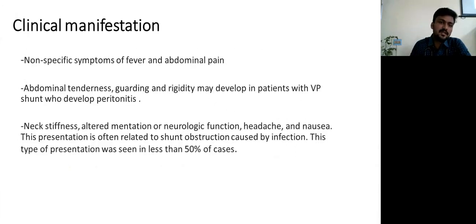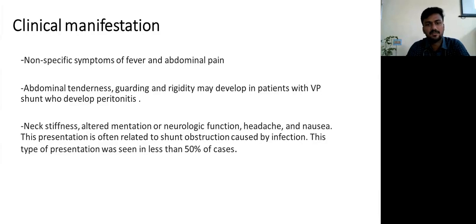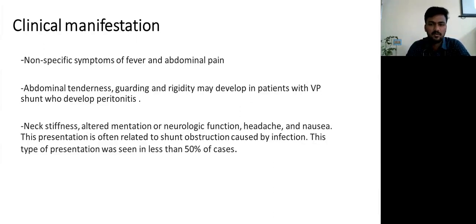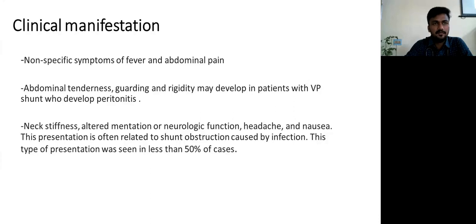If a patient with a shunt develops shunt infection causing probable shunt blockage, they can present with varied features: non-specific symptoms of fever and abdominal pain, or redness and guarding/rigidity in the abdomen like localized peritonitis, or features of full-blown meningitis like neck stiffness, neurological deterioration, headache, and nausea. This kind of meningitis presentation was seen in less than 50% of cases of shunt infection.